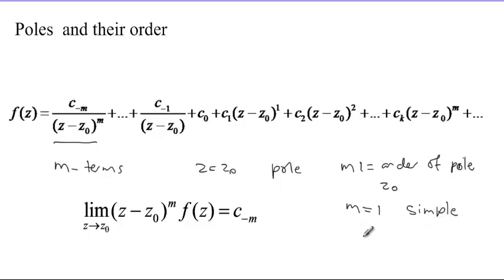Otherwise a pole can be repeated like twice, when m equals 2 then you call it a double pole, or from m greater than 1 you can say it's a multiple pole of order m. Another way of defining a pole of order m is: z0 is a pole of order m if the limit as z approaches z0 of (z minus z0) to power m times f equals the coefficient C sub minus m.